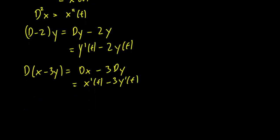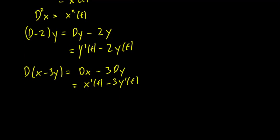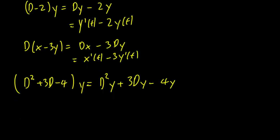And sometimes we even have the D's in the form of a polynomial. For instance, (D² + 3D - 4) applied to y is going to be D²y + 3Dy - 4y. This is simply equal to y''(t) + 3y'(t) - 4y(t).